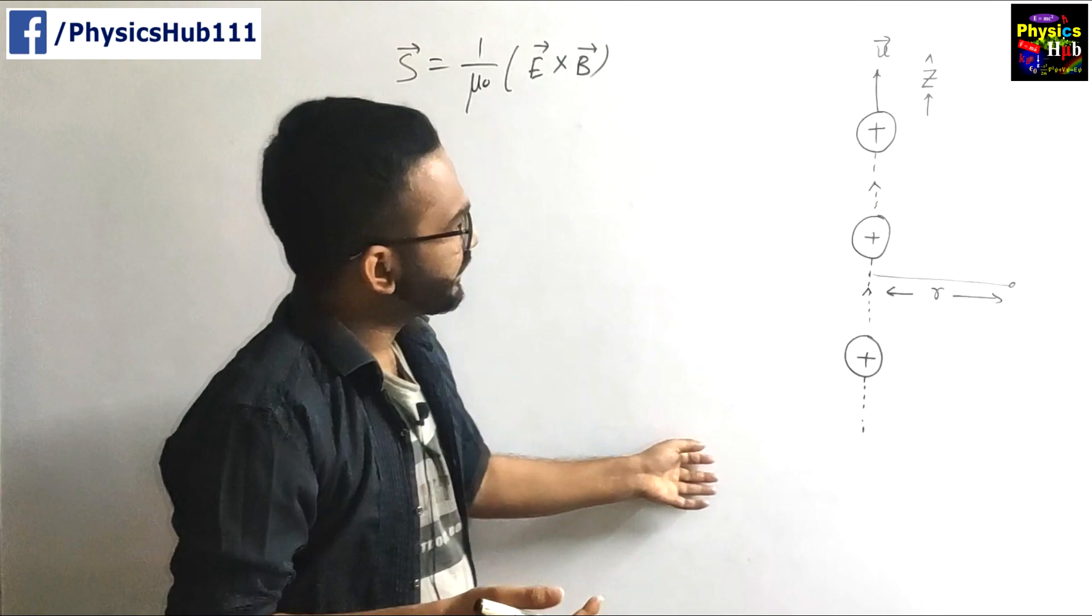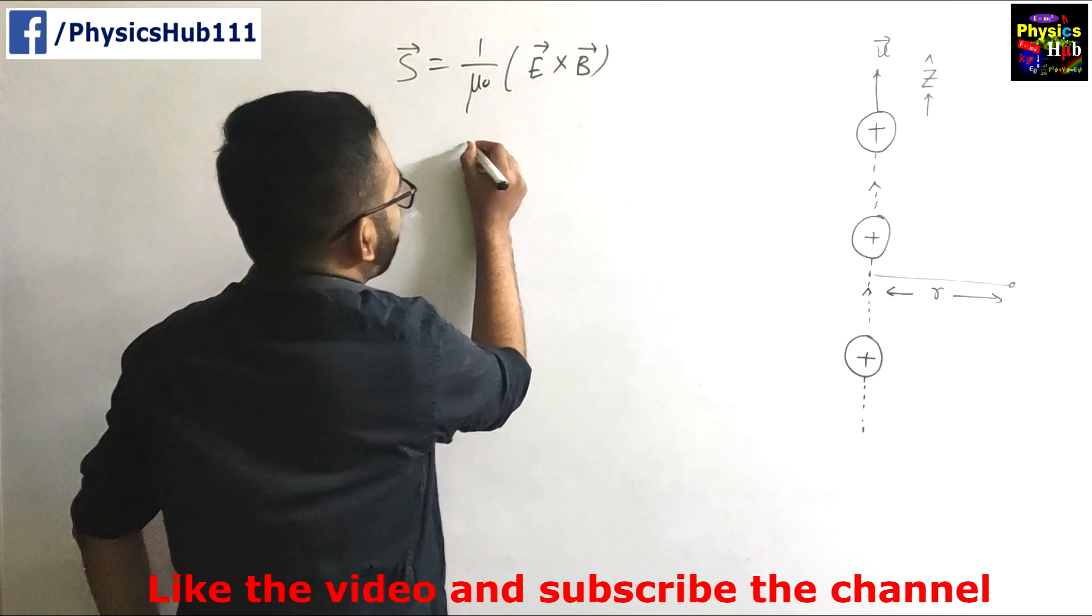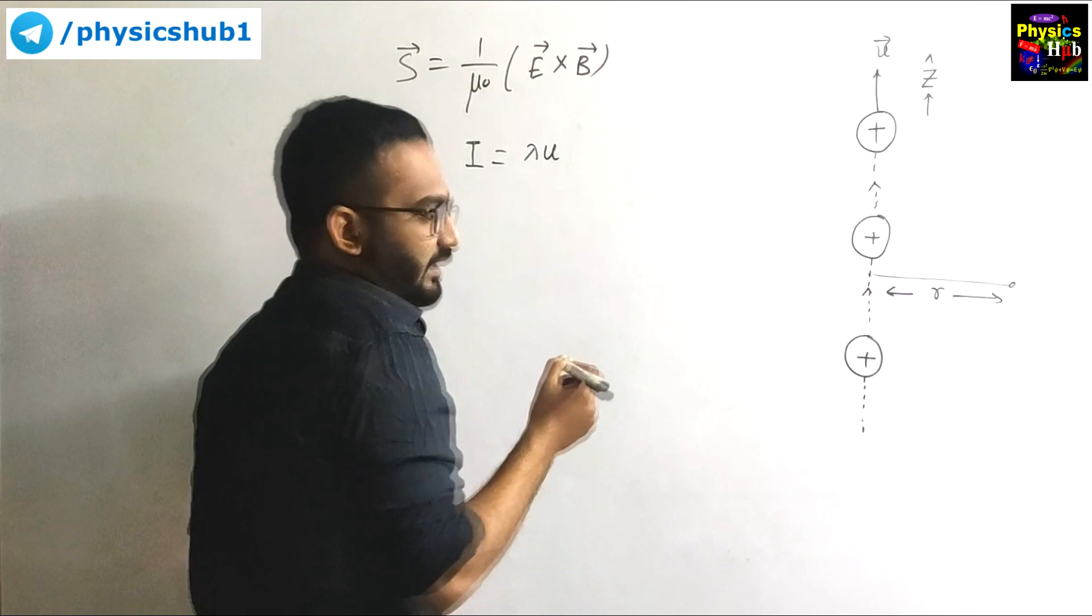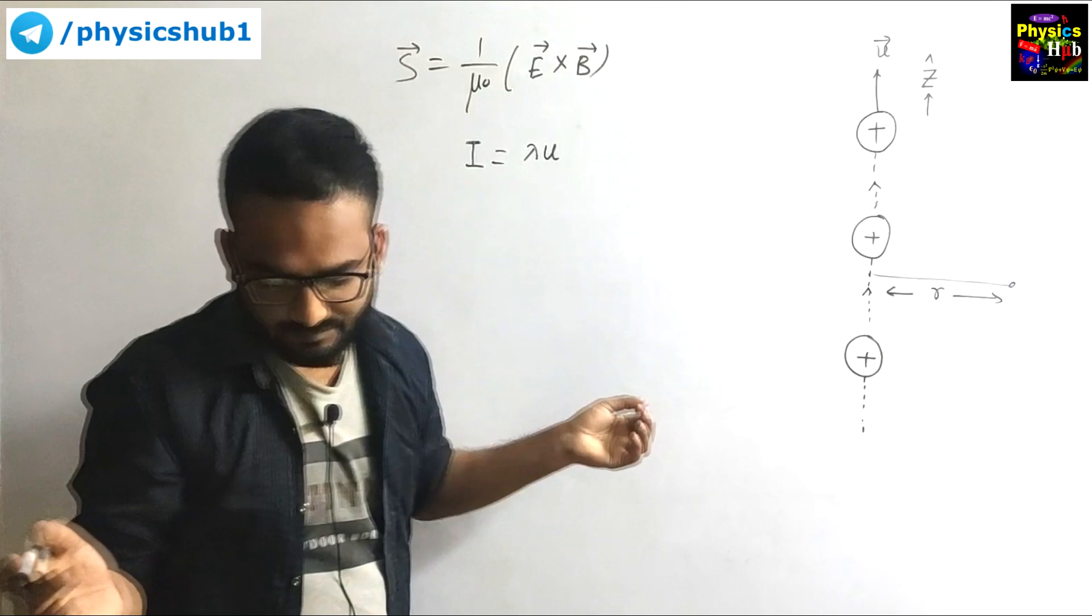What will be the effective current if these protons are moving with some velocity u? You know the current flowing I will be equals to lambda into u, where lambda is the charge per unit length. So I equals to lambda into u.